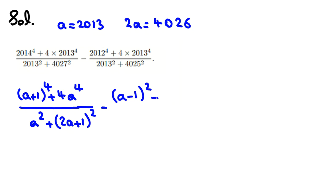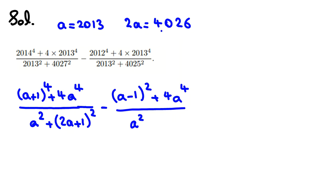The second fraction: (A − 1)⁴ plus 4 times 2013⁴ — that is 4A⁴ — all over 2013 squared, which is A². Then 4025 = 2A − 1, so the denominator involves (2A − 1)².